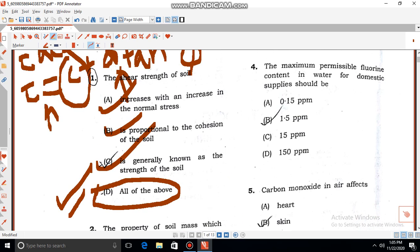Then, the maximum permissible fluorine content in water for domestic supplies should be... If fluorine is excessive, then fluorosis is a disease. So we need to keep the minimum. As per the standard, we need to keep 0.15 ppm.